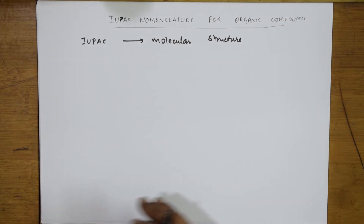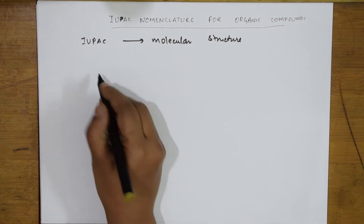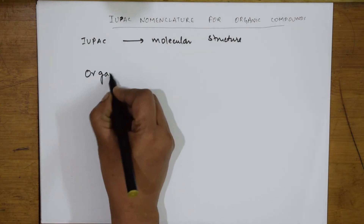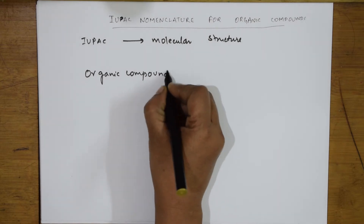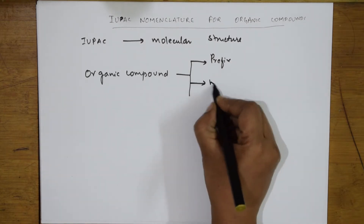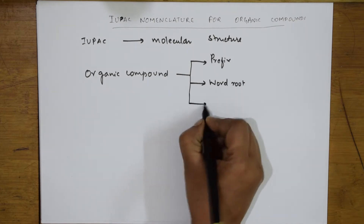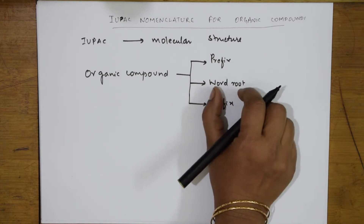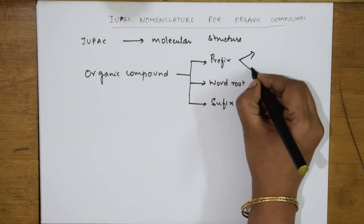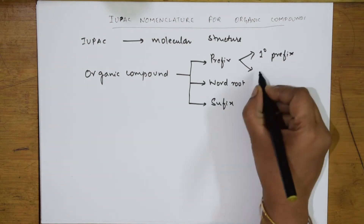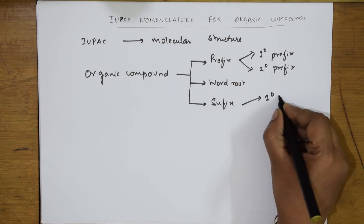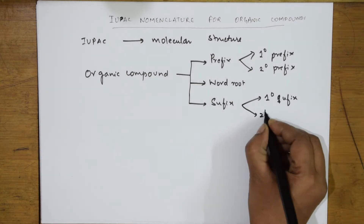In IUPAC nomenclature, what are the components? In the particular molecular structure, there are three things. When you are naming an organic compound, it is named as: first would be the prefix, second would be the word root — which is the main parent chain — and third would be the suffix. The prefix is again divided into primary prefix and secondary prefix, and the suffix is again divided into primary suffix and secondary suffix.